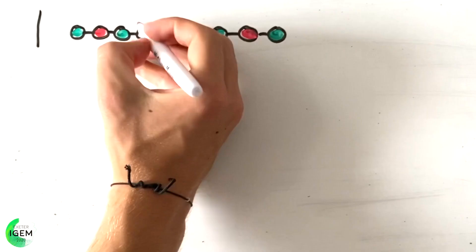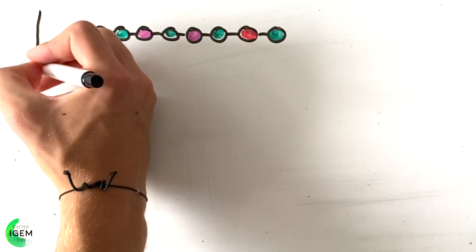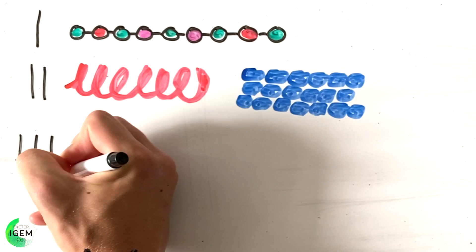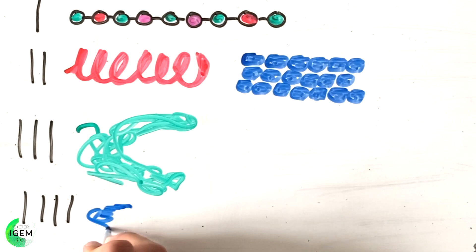These can be broken down into four tiers. The primary structure, which is just the sequence of amino acids. The secondary structure, which can either be an alpha helix or a beta pleated sheet. The tertiary structure, which is the actual shape of the protein. And in some cases, a quaternary structure, which is how these different chains link together.